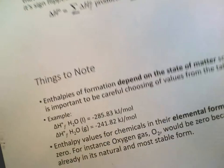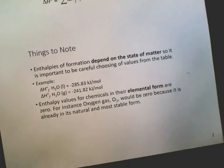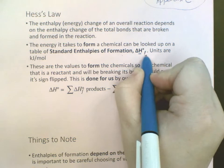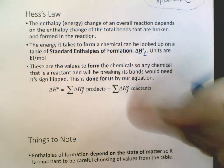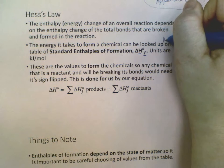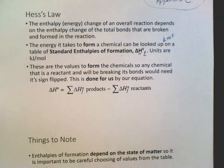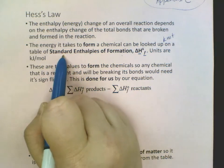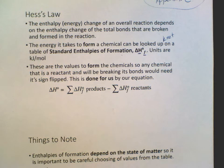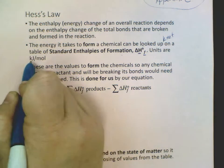Those are standard enthalpies of formation. The subscript f stands for formation — to form the chemical. The little circle symbol means it's a standard enthalpy, meaning all the values in that list have been measured under the same conditions: 298.15 Kelvin, or 25 degrees Celsius. So all values were measured at the same temperature for consistency and comparability. The units for all of them are kilojoules per mole.